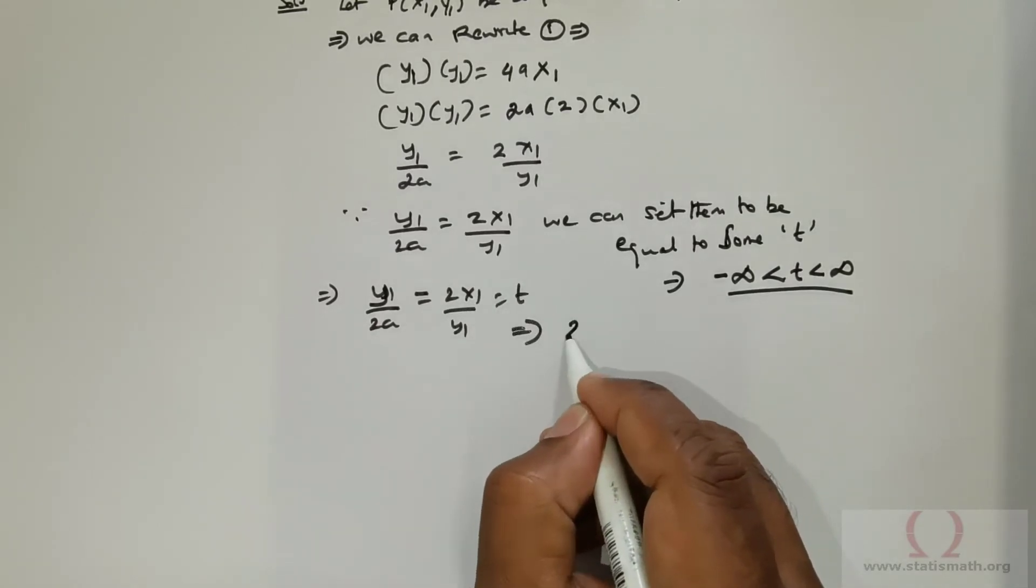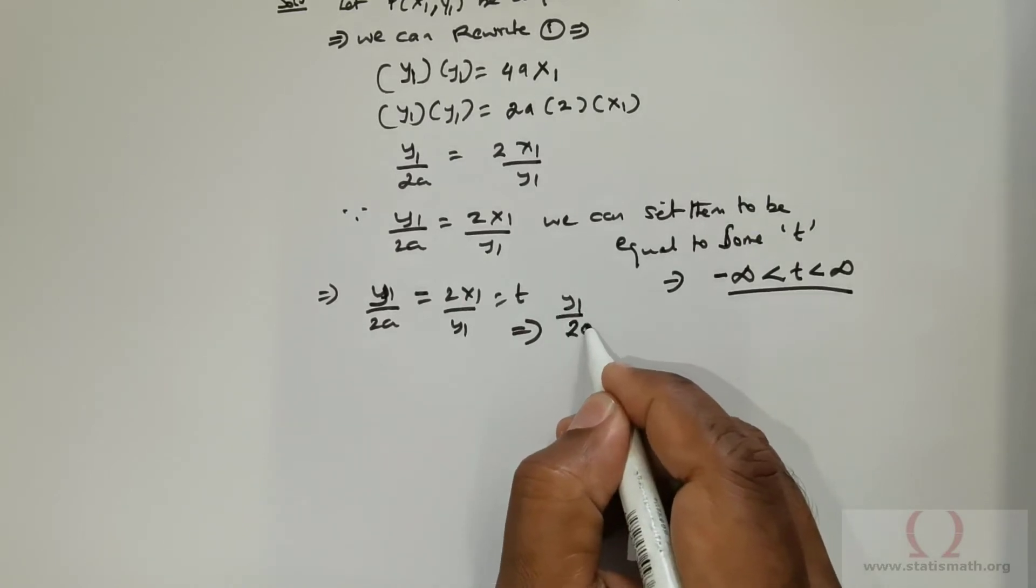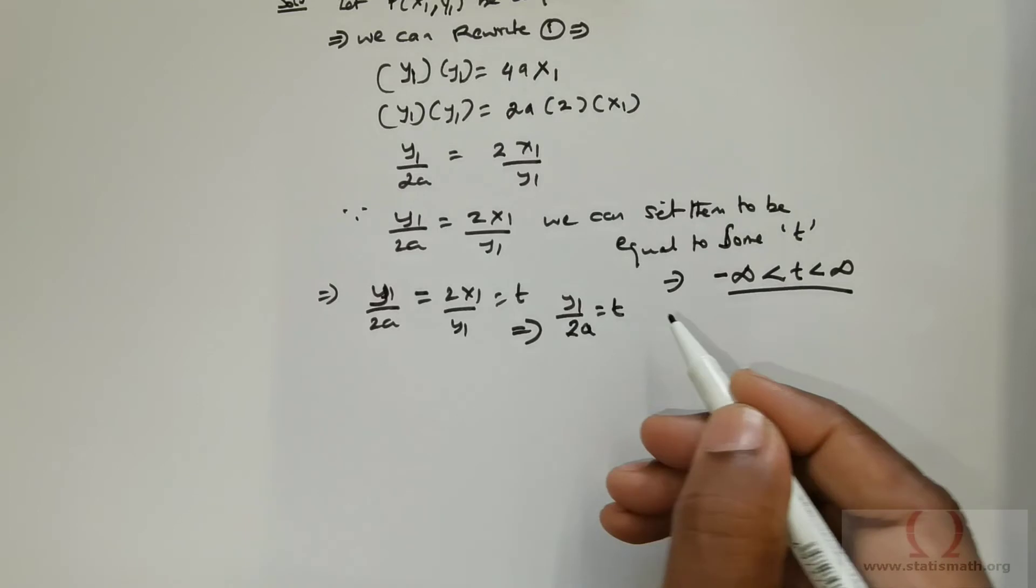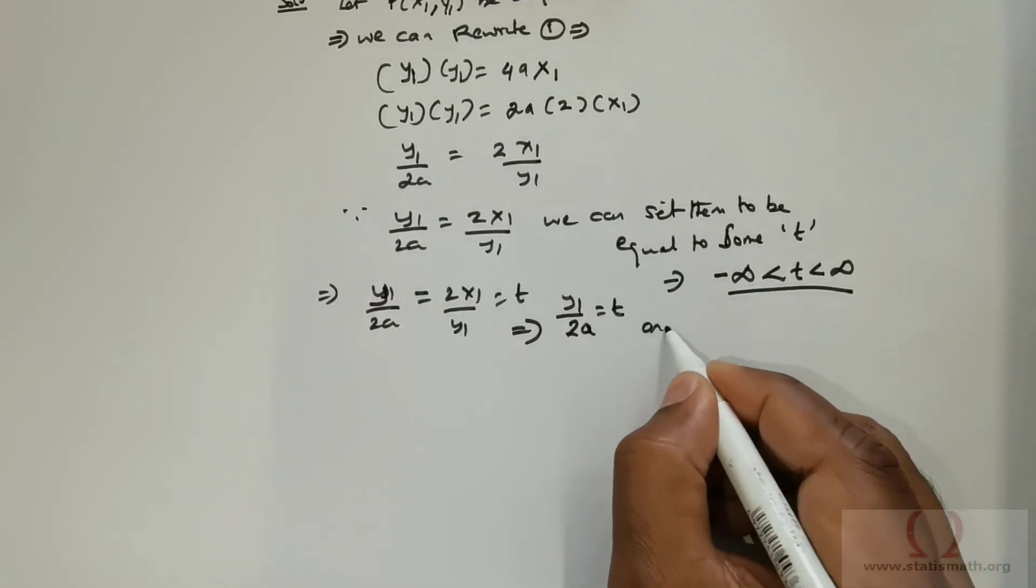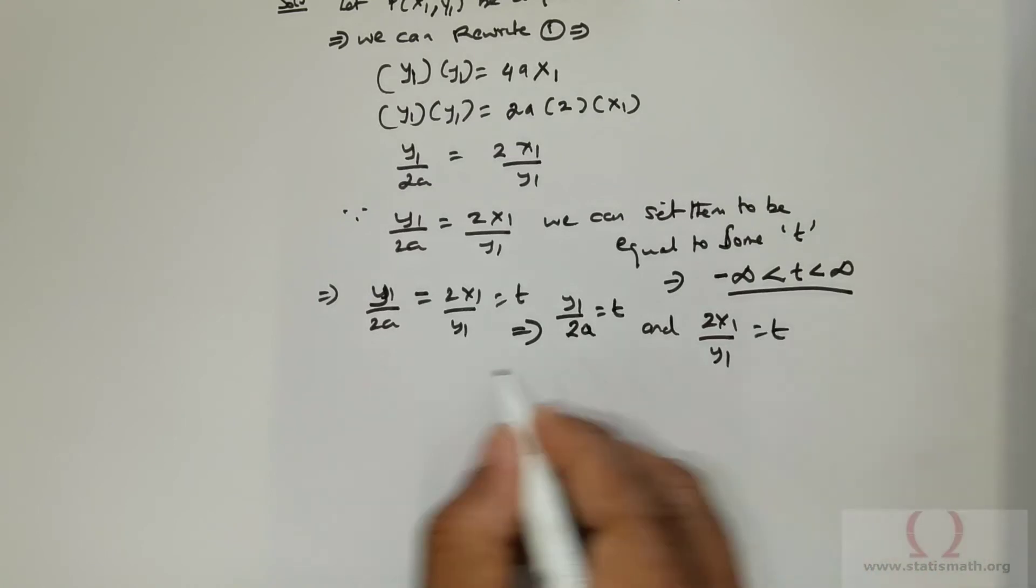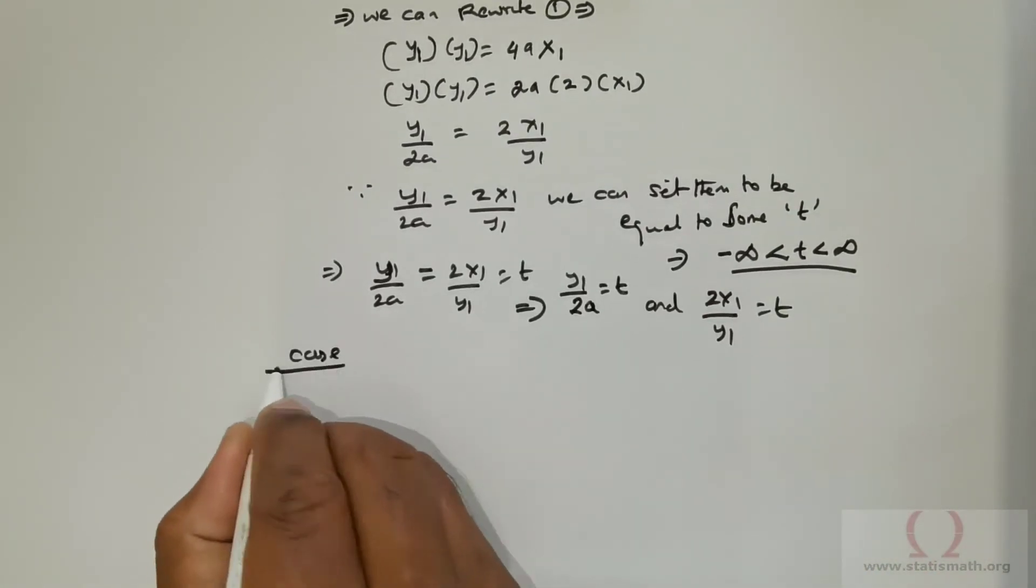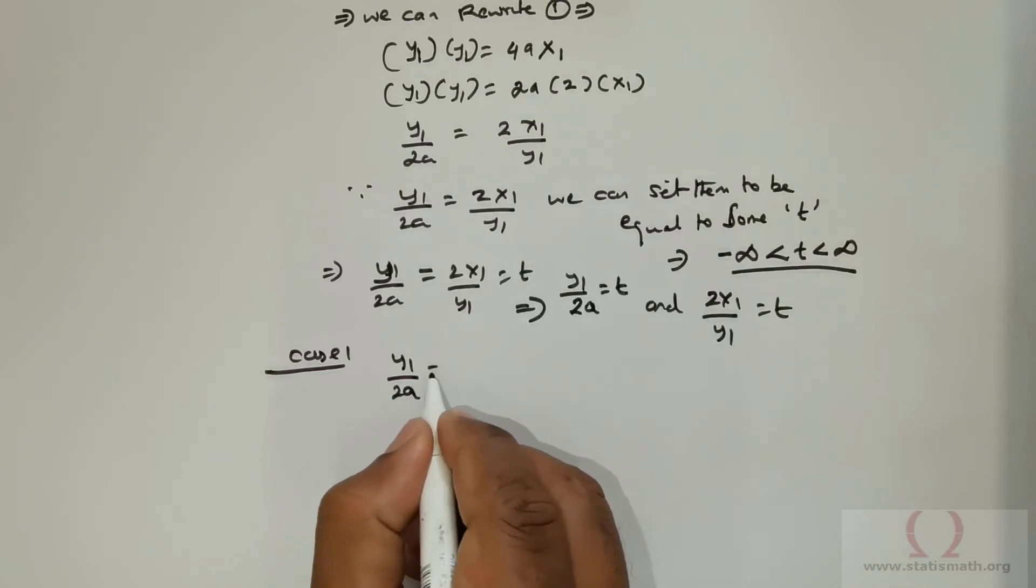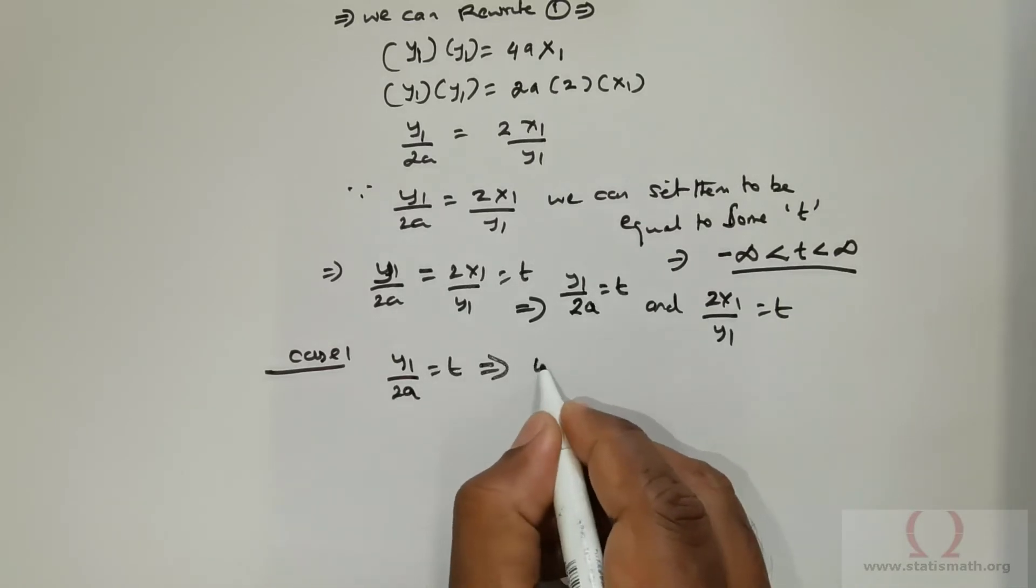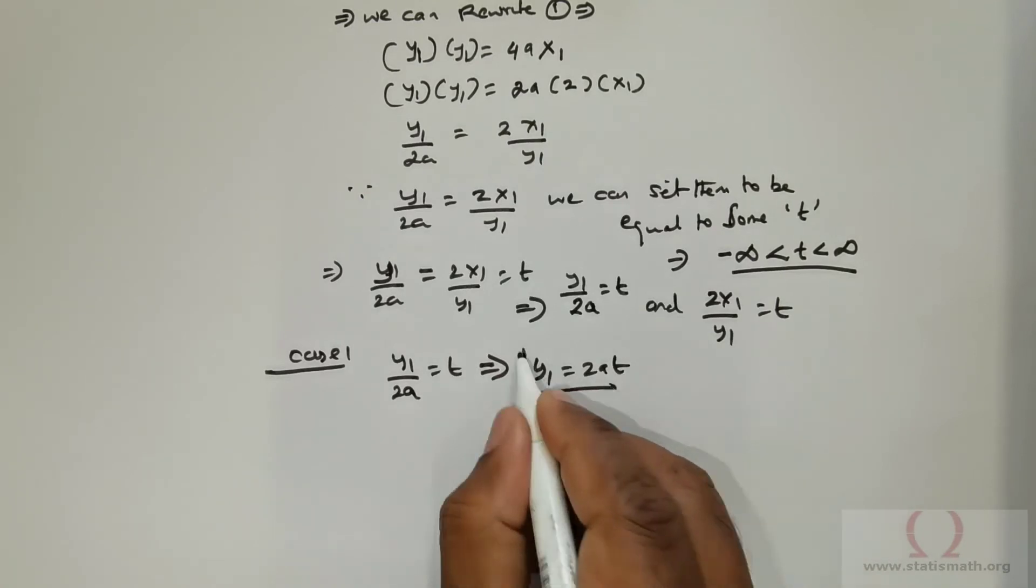We can always consider y₁/2a = t and 2x₁/y₁ = t. Case 1: y₁/2a = t, which means y₁ = 2at.